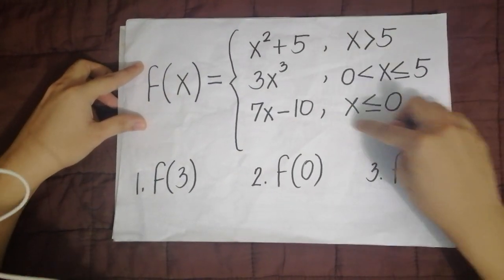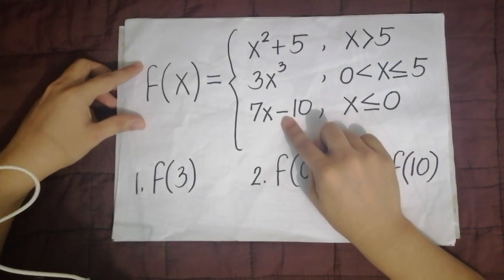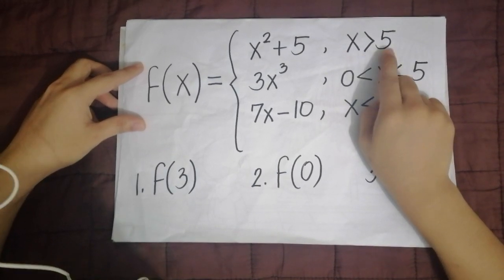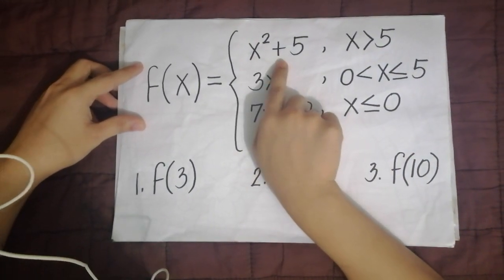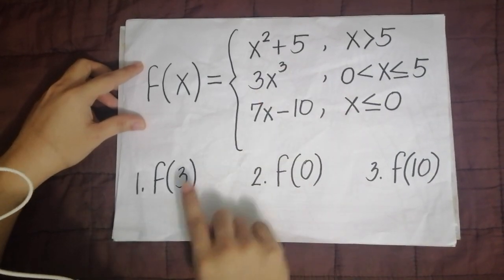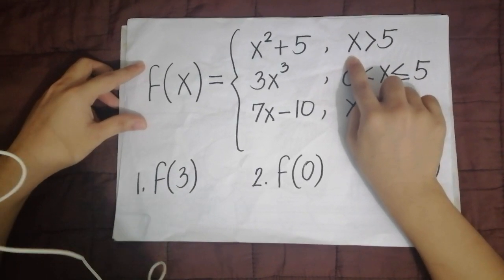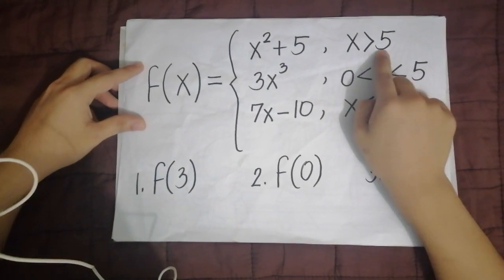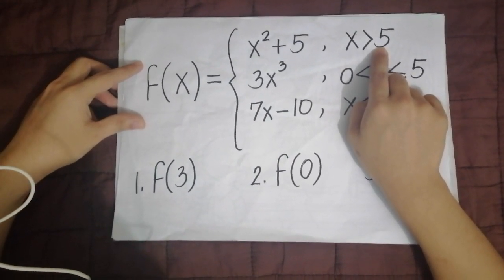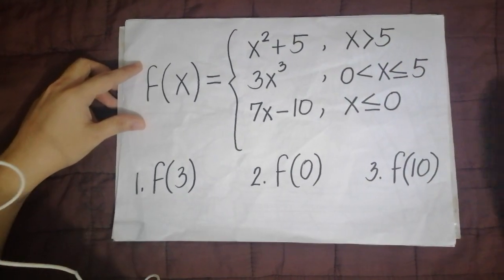So as you can see here, we have x is greater than 5. You will use the equation x squared plus 5 when the given value of x falls under this restriction. What does x greater than 5 mean? So the numbers that can go here are 6, 7, 8, 9, 10, to positive infinity.